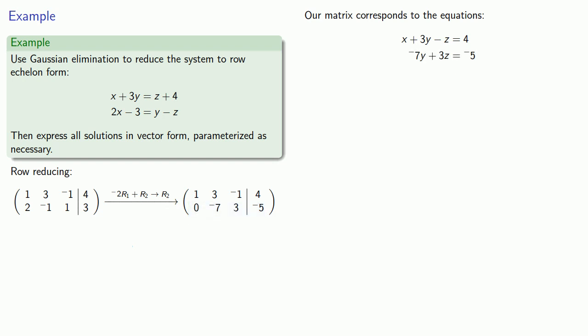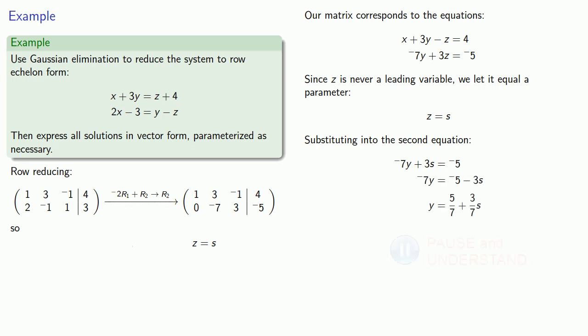We notice that x and y are leading variables, but z is never a leading variable, so we'll let it be the free variable and make it equal to a parameter. We'll let z equal s and substitute it into our second equation, which becomes minus 7y plus 3s equals negative 5. We'll then solve this equation for y and get y equals 5 sevenths plus 3 sevenths s.